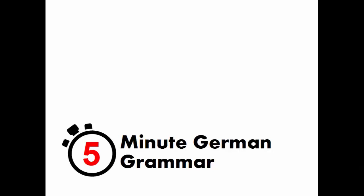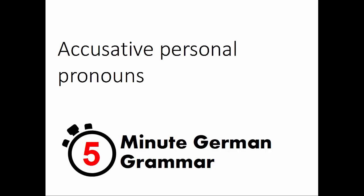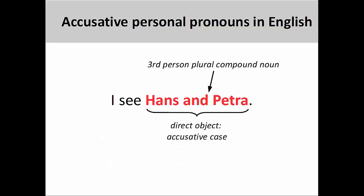Welcome to 5-Minute German Grammar. This presentation will introduce accusative personal pronouns. As we have seen in an earlier presentation, a personal pronoun is a word that can substitute for a person or a noun. In this sentence, we have a third-person plural compound noun, Hans and Petra. Since the noun is the direct object of the verb, it is in the accusative case.